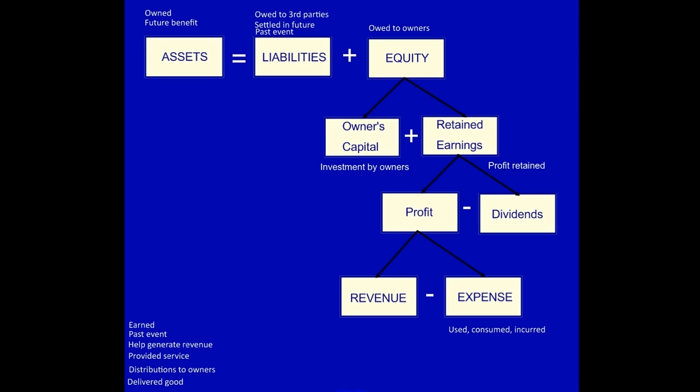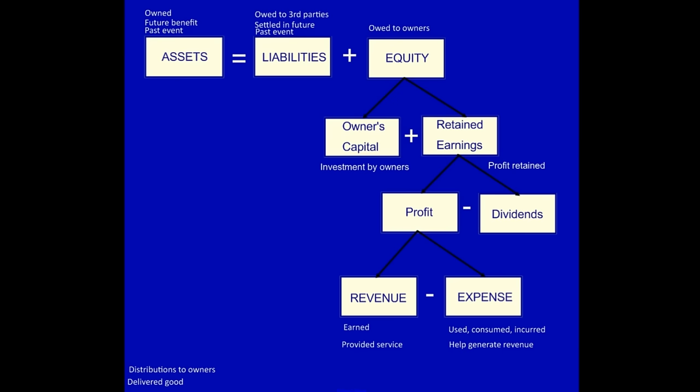'Investment by owners' — that is owner's capital, when owners give cash to the business in order to start the business. 'Earned' — earned is connected to revenue; revenue must be earned in order to be recorded. 'Past event' — assets are due to a past event. 'Help generate revenue' — the only thing that helps generate revenue is the expenses that have been used, consumed, or incurred. 'Provided a service' — the only way we earn revenue is we must have provided a service or delivered a good.